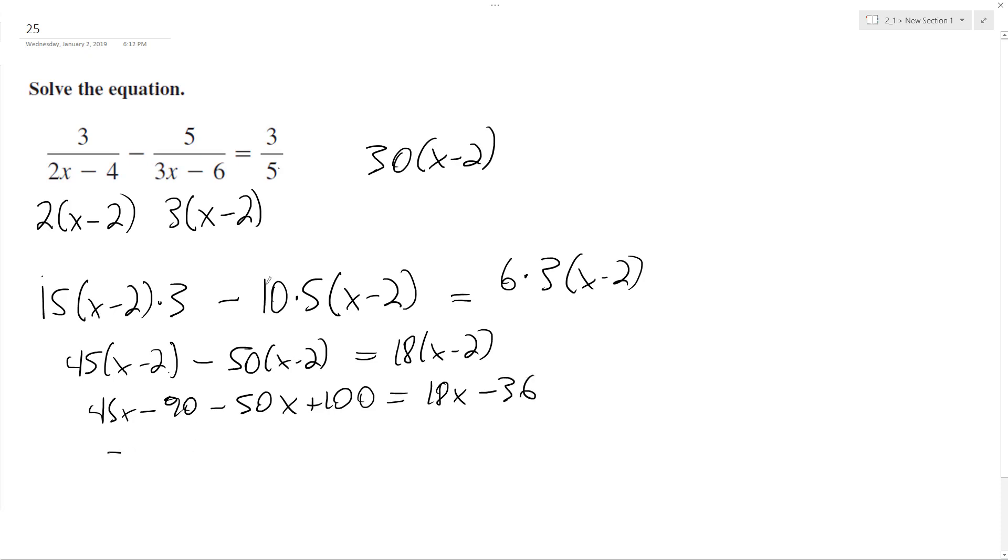Combine like terms: negative 5x plus 10 equals 18x minus 36. Add 36 to both sides. Add 5x to both sides. We end up with 23x equals 46. Divide by 23. Hey, this worked out nice. x is equal to 2.